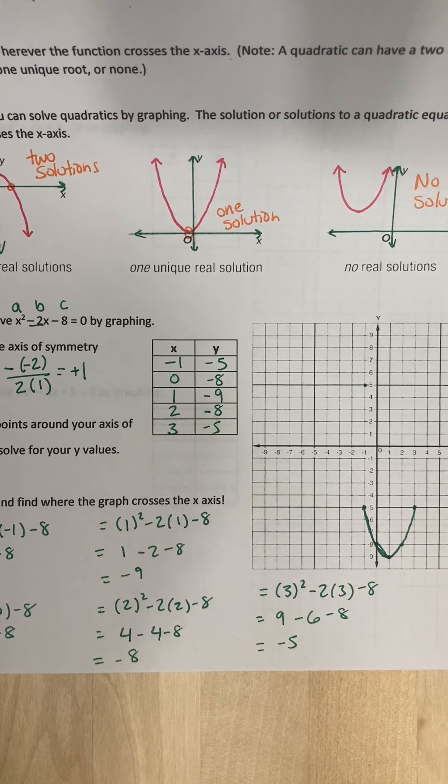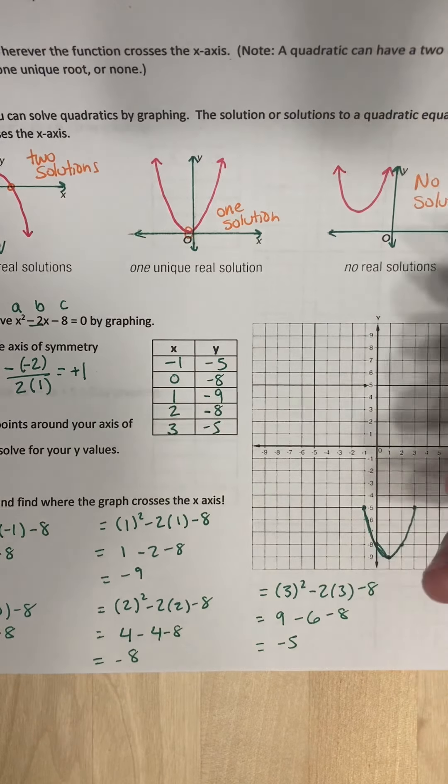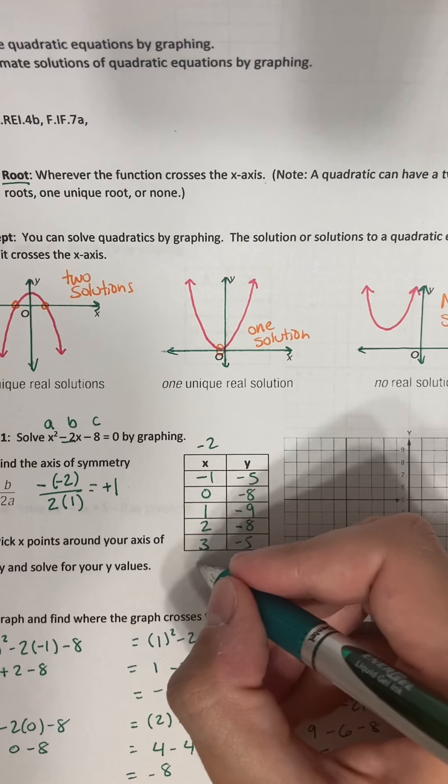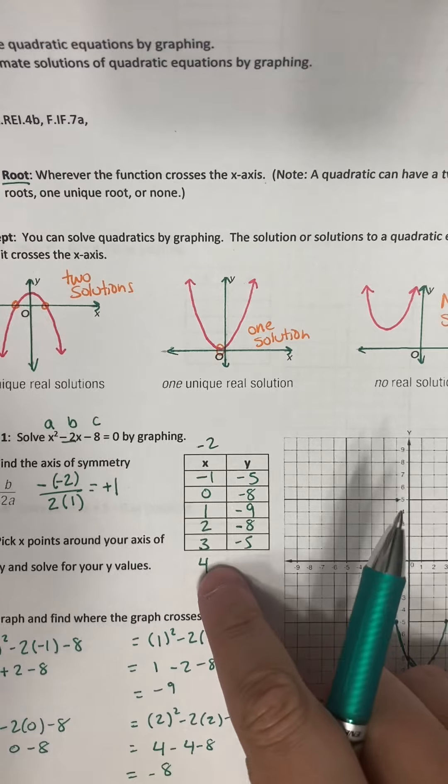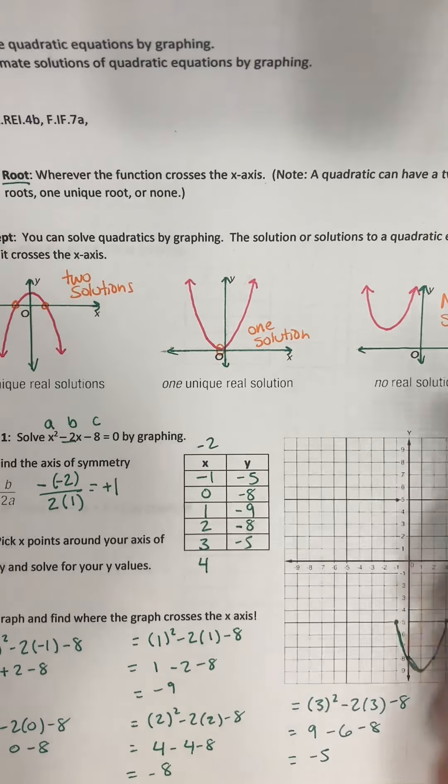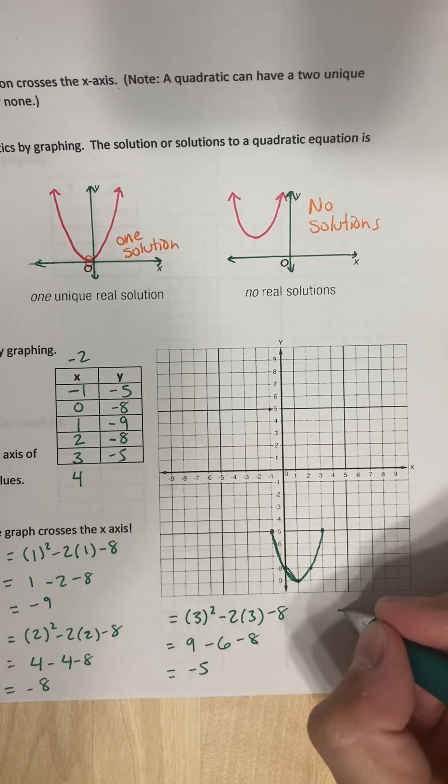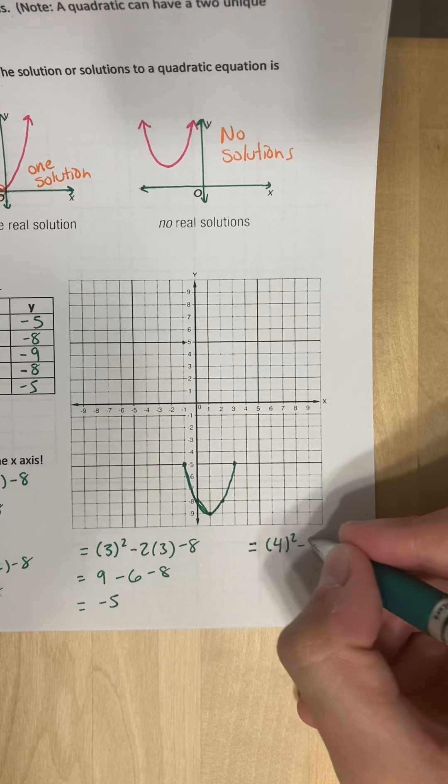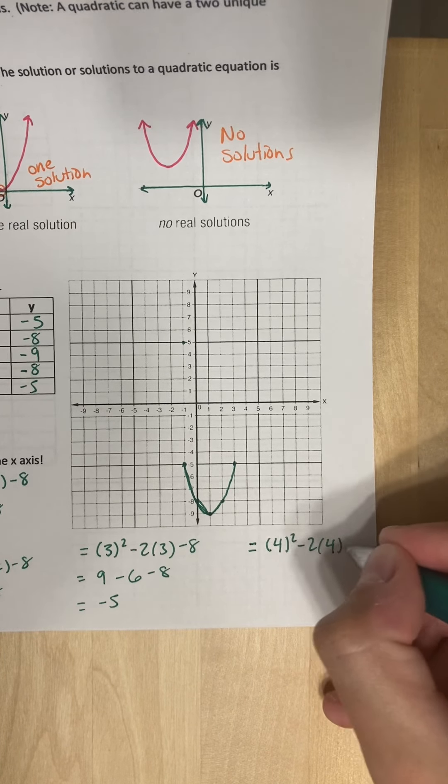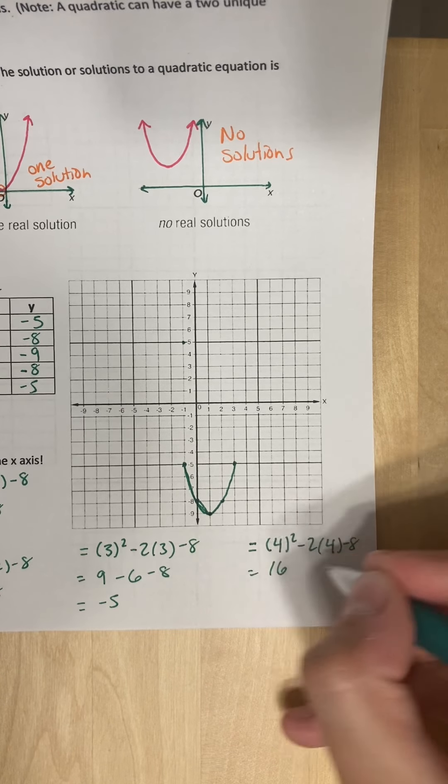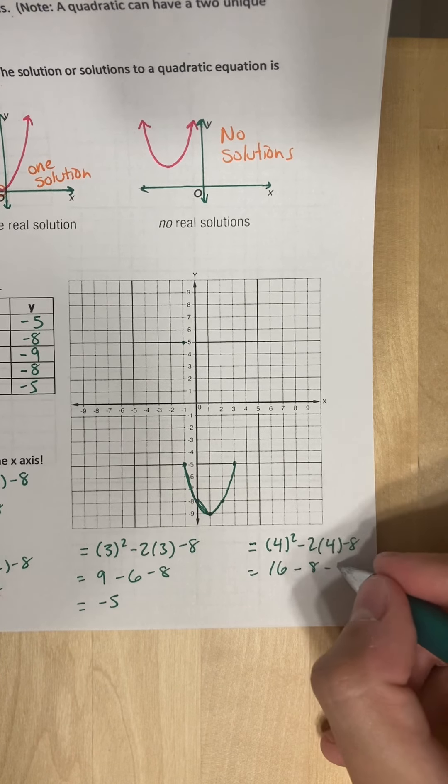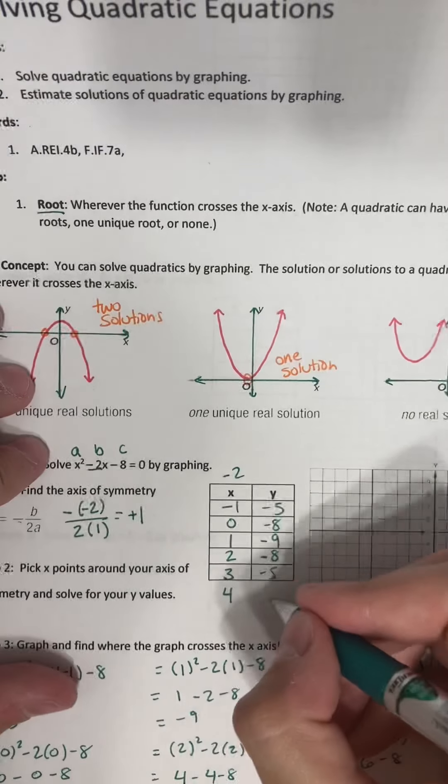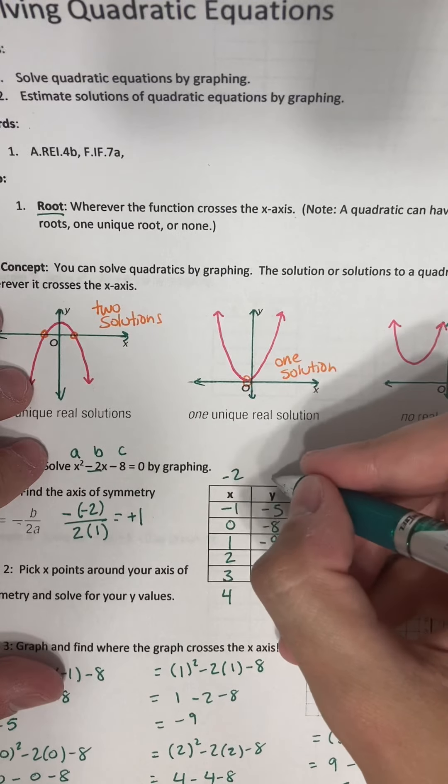So I know it should keep going this way. So let's try a couple other points. Let's try negative 2 and let's try 4. And I know that 4 and negative 2 are going to give me the same point. So I only really have to do 1. So let's do 4. So this will be 4 squared minus 2 times 4. I get 16 minus 8 minus 8, which is going to be 0, which is perfect. So that's 0. So I know that negative 2 is going to give me 0.